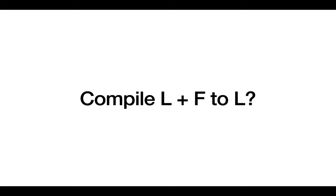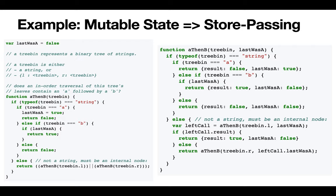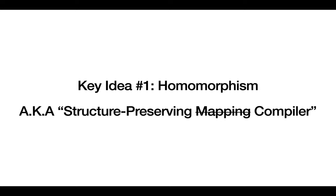This is a global, non-structure-preserving transformation — features of the language that didn't change, like functions, are being modified as a result. And yet this satisfies our previous definition: we can compile JavaScript with mutation to JavaScript without mutation via store-passing compilation. So this still doesn't quite capture expressiveness.